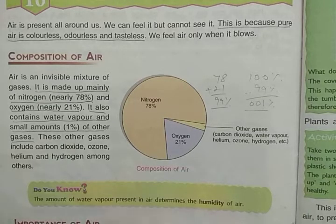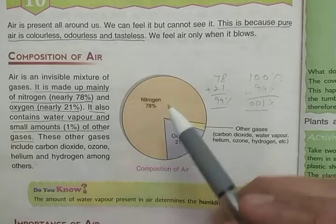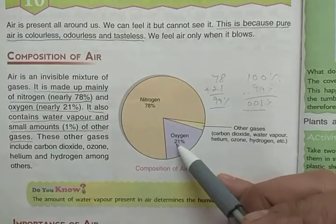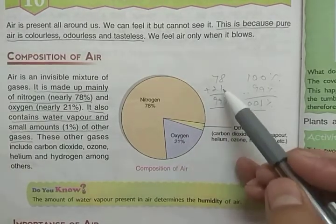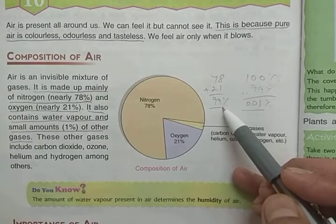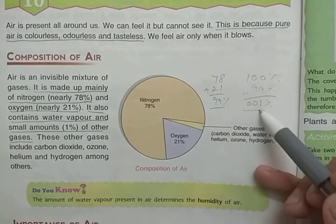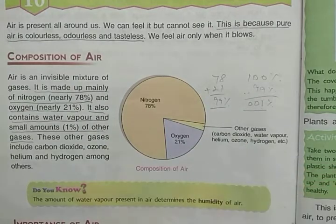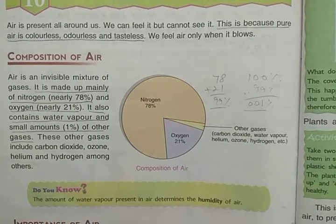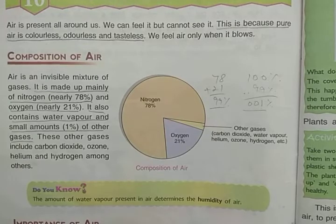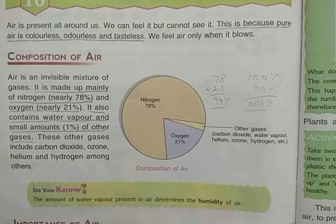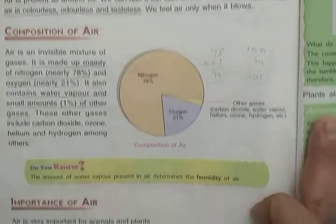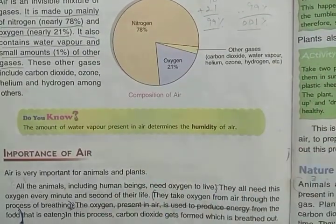Nitrogen makes up 78% and oxygen makes up 21% of air — together they make up 99% of air. The remaining 1% consists of water vapors and other gases including carbon dioxide, ozone, helium, hydrogen, and some others.